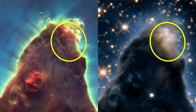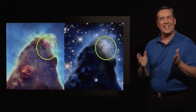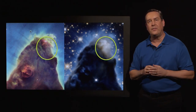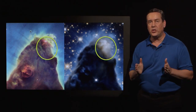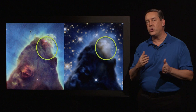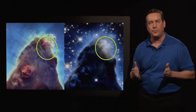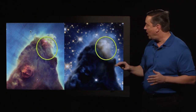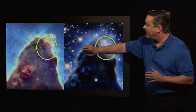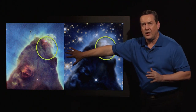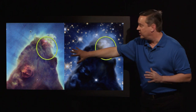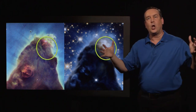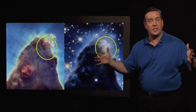Now, infrared has a lower resolution than visible light. That's again because of the wavelengths — the resolution of a telescope is proportional to the wavelength that you are observing. If you wanted to get the visible-light equivalent resolution in the infrared, you'd need a larger mirror on the telescope.